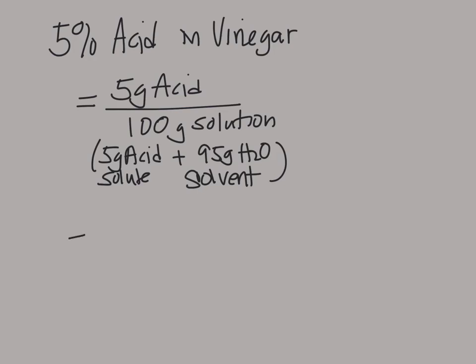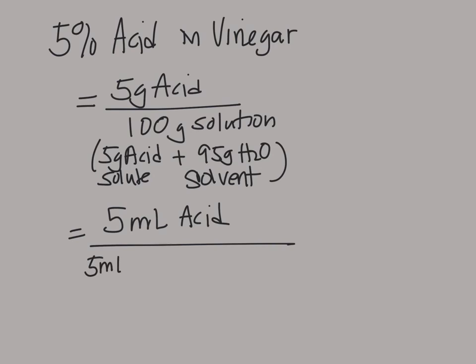Another way to approach this is by volume: we would have 5 ml of acid and 95 ml of water. This will help us later when we need to convert between percent and one of the other concentration units we might have to find.